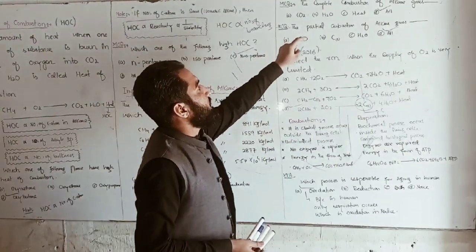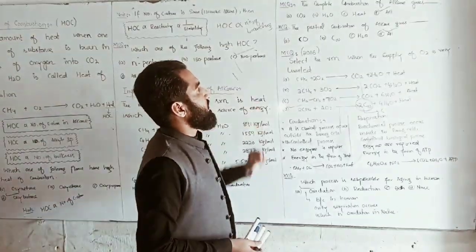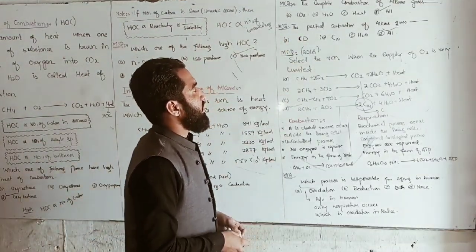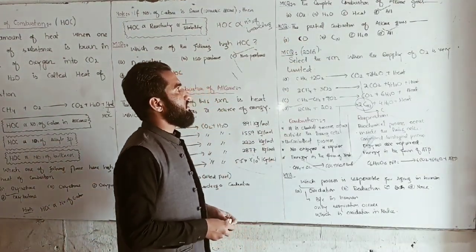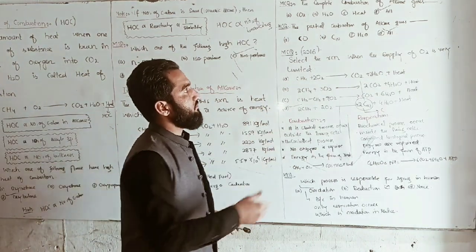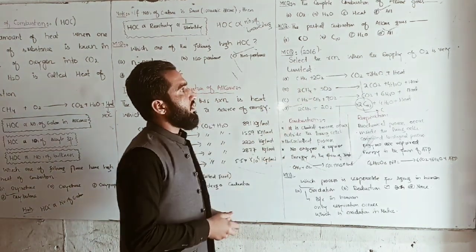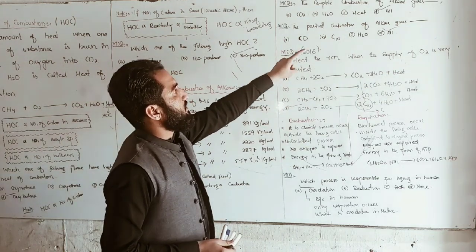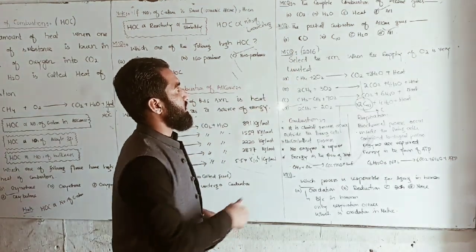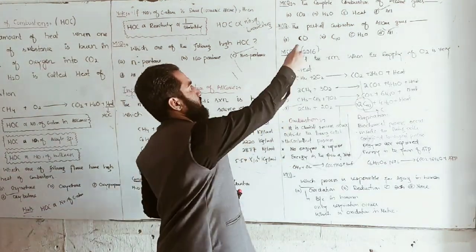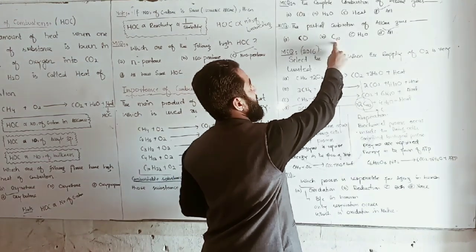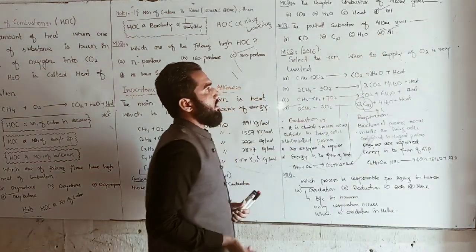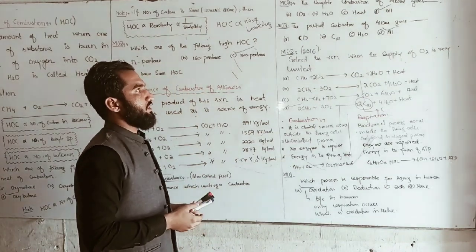The complete combustion of alkane gives CO2 and water as products. The partial (incomplete) combustion of alkane gives carbon monoxide, carbon in solid form (carbon black), and water as products.